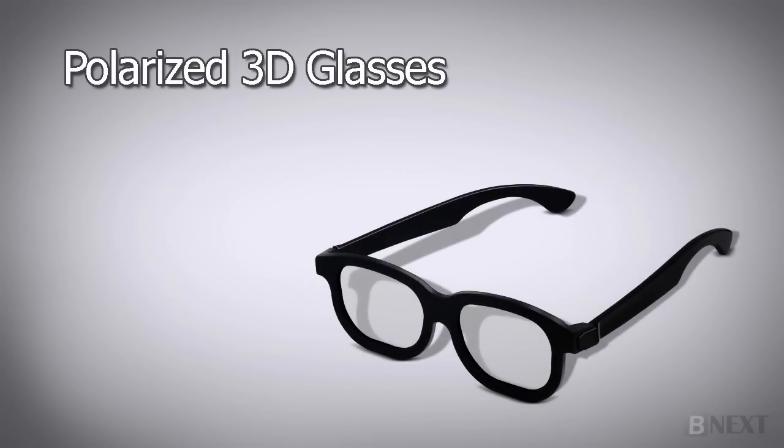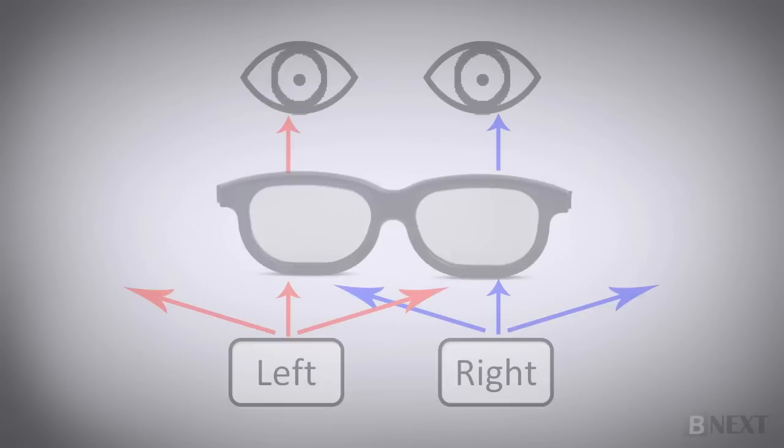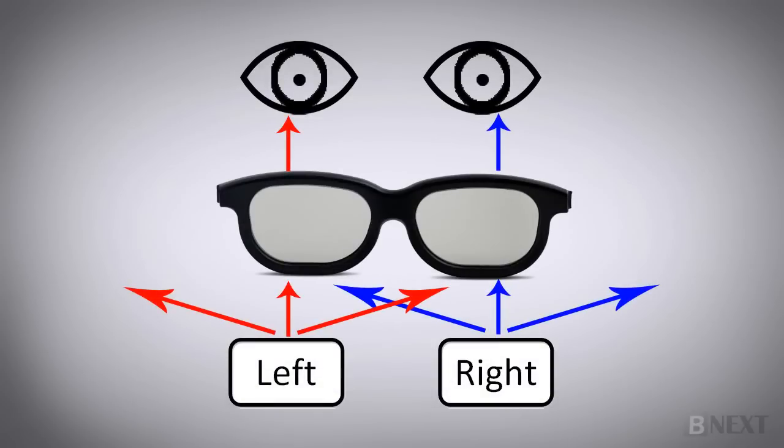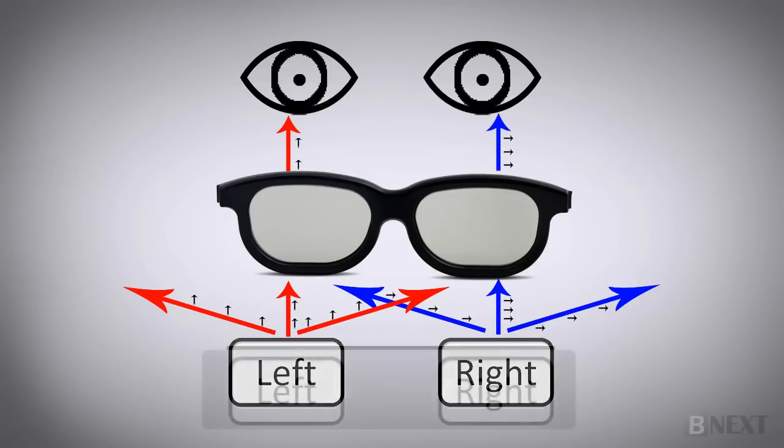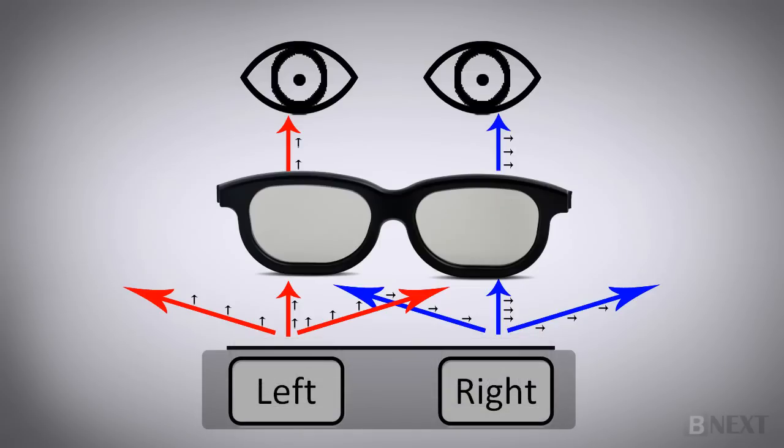Polarized 3D glasses are the most common glasses used in cinemas today. The glasses have special lenses that filter the intended frame to the correct eye using differences in light polarization or direction. To use these glasses, a compatible 3D display or projector is required, which polarizes light differently for each eye.